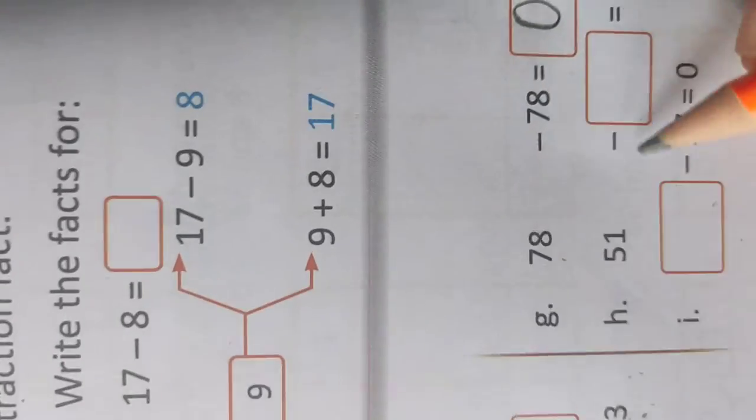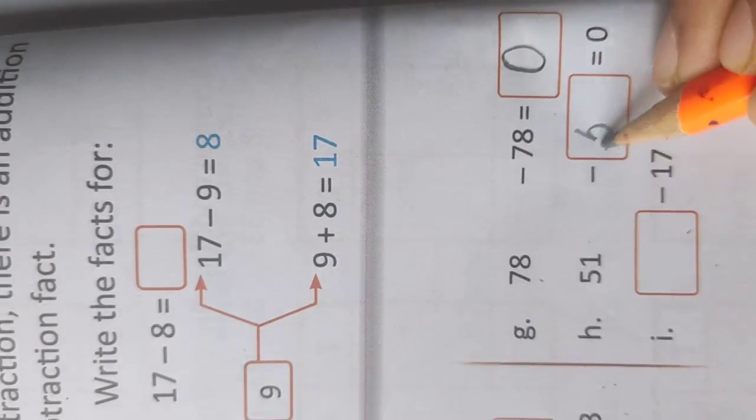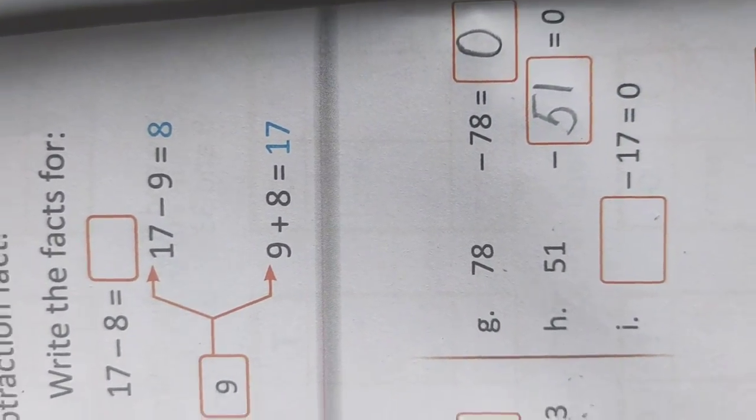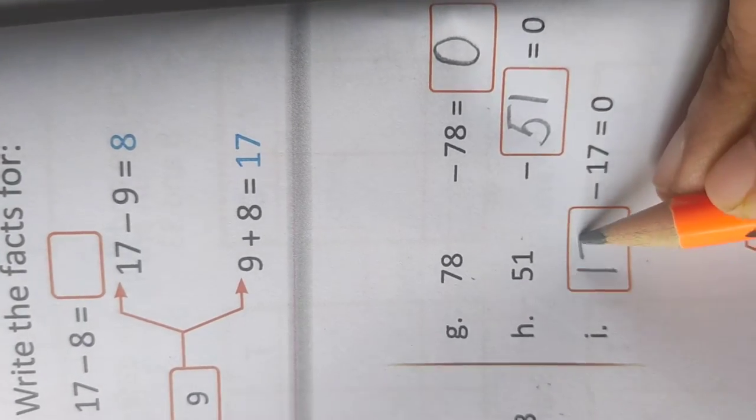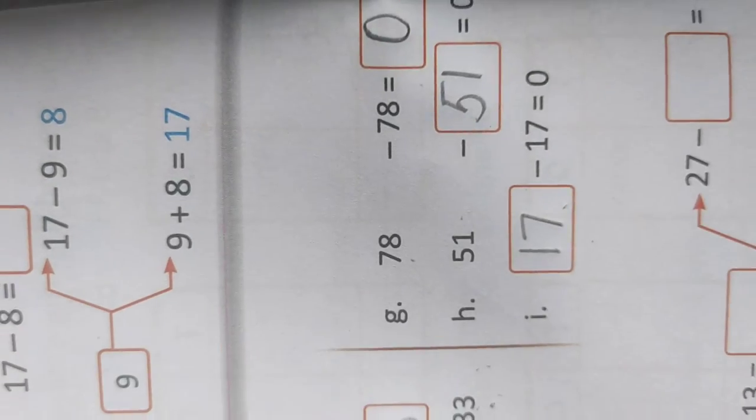Next is, 51 mein se kya subtract karen ki 0 aaye? 51 only. Same number we will write, 51. Similarly, 17 mein se bhi 17 subtract karenge. We will get 0 as the answer.